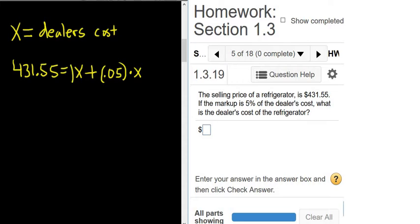There is a 1 here, it's invisible, so all you do is you add. So 1 plus 0.05 is 1.05x and then here you have 431.55.